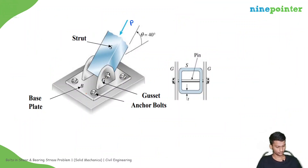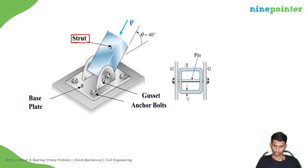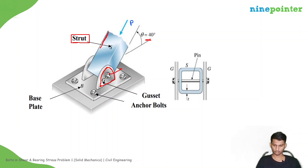This is the problem. First, let us understand the structure. This is a strut. The shape of the strut is like this. The angle theta is equal to 40 degrees. And these are gusset plates. This strut is fixed to the gusset plates with the help of a pin. And this is the base plate, and on the base plate there are anchor bolts.